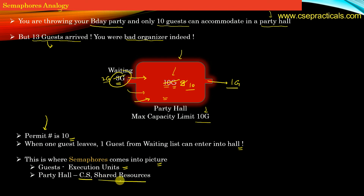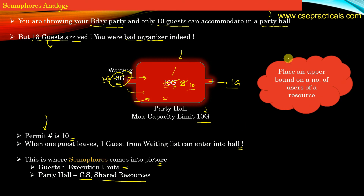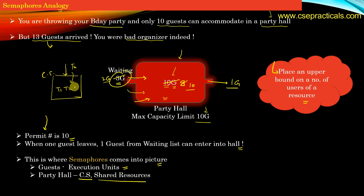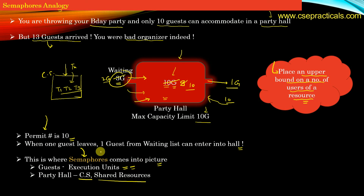Here guests correspond to execution units, meaning threads, and the party hall corresponds to the critical section or a shared resource of your program. Semaphores have one objective: they place an upper bound on the number of users of a resource. Until now we studied that only one thread is allowed inside a critical section at any point of time, but semaphores allow multiple threads — T1, T2, T3 — to simultaneously execute in the critical section concurrently, while placing an upper bound on the number of threads, in this case 10. Use semaphores when a resource in your program can be accessed by N number of threads.